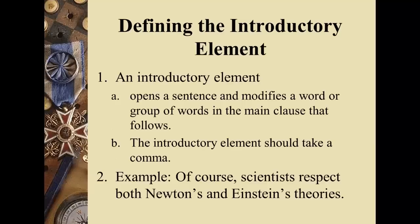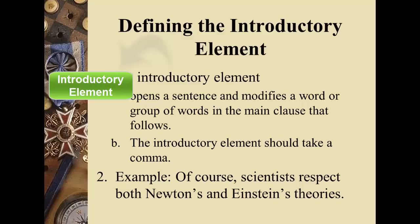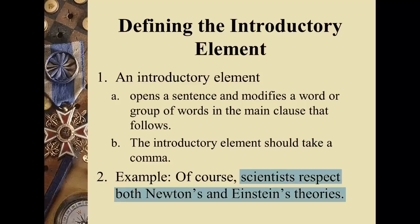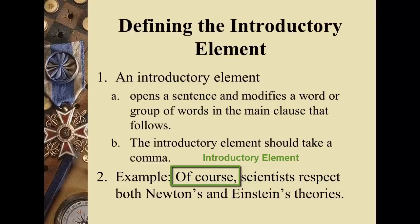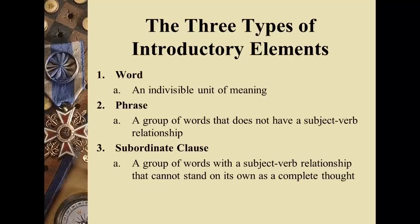An introductory element opens a sentence and modifies a word or group of words in the main clause that follows. The easiest way to think about it is that it comes before a sentence that stands on its own as a complete thought, and it takes a comma. For example: 'Of course, scientists respect both Newton's and Einstein's theories.' The group of words 'scientists respect both Newton's and Einstein's theories' is a grammatically correct, stand-alone main clause — also called a simple sentence. Therefore, 'of course' is an introductory element that takes a comma because it modifies the rest of the sentence.